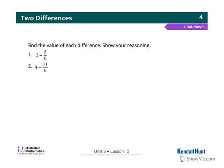Hi guys, this is the cool down for unit 3, lesson 10. Number 1, we have 2 wholes minus 5/6.